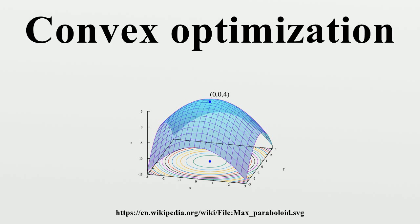Given a real vector space together with a convex, real valued function defined on a convex subset, the problem is to find any point for which the number is smallest, i.e., a point such that for all, the convexity makes the powerful tools of convex analysis applicable in finite-dimensional normed spaces.